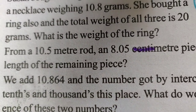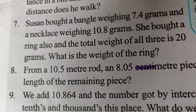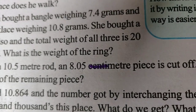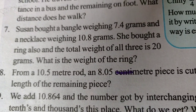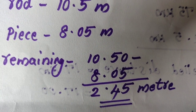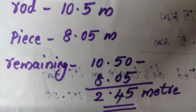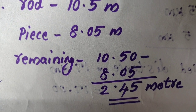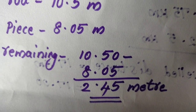Question 8. From a 10.5 meter rod, an 8.05 meter piece is cut off. What is the length of the remaining piece? The remaining piece length is found by subtraction: 10.50 minus 8.05. Working through: 0 minus 5, borrow to get 15 minus 5 is 10; continuing gives 2.45 meters.